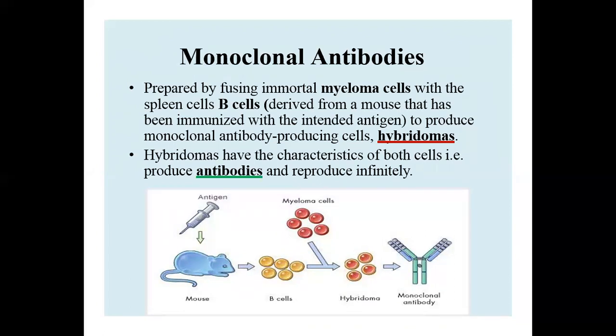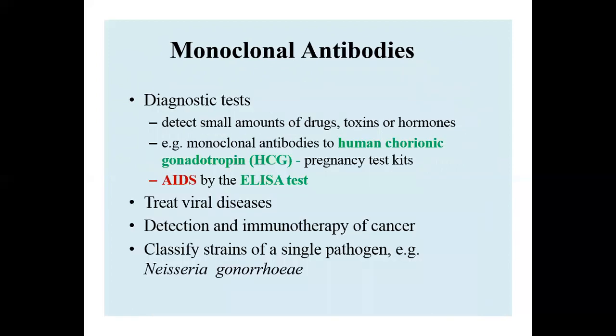The hybridoma has characteristics of both cells: it can produce antibodies and reproduce indefinitely. Monoclonal antibodies can be used for detection of small amounts of drugs, toxins, or hormones. Examples include human chorionic gonadotropin (hCG) used for pregnancy testing, ELISA tests for AIDS detection, treatment of viral diseases, immunotherapy of cancerous cells, and classification of strains of single pathogens such as Neisseria gonorrhoeae.